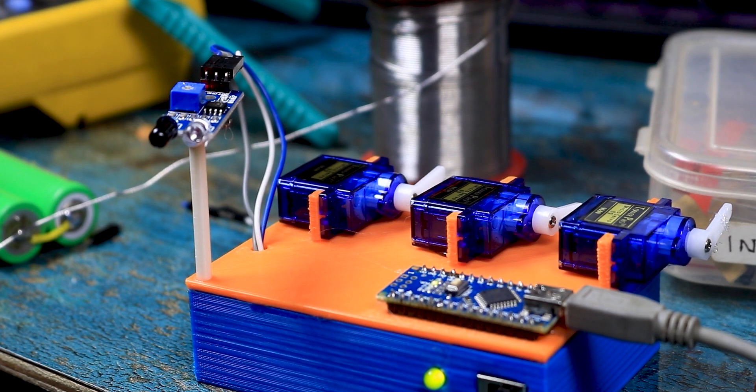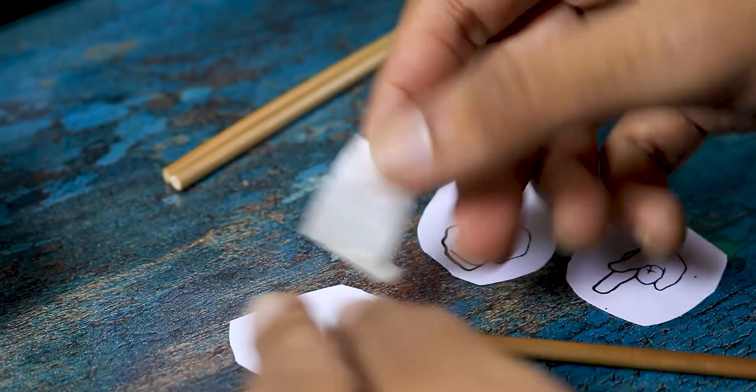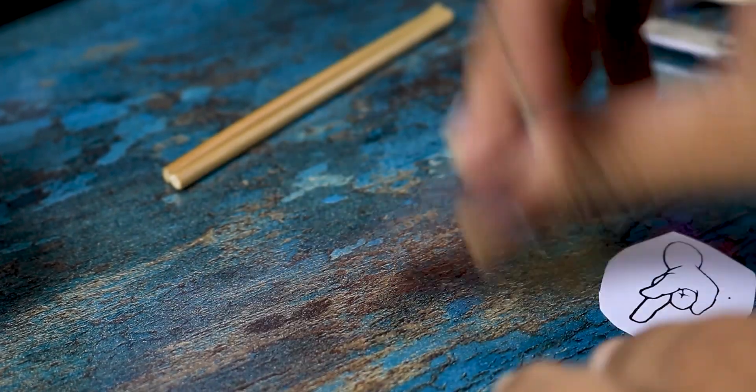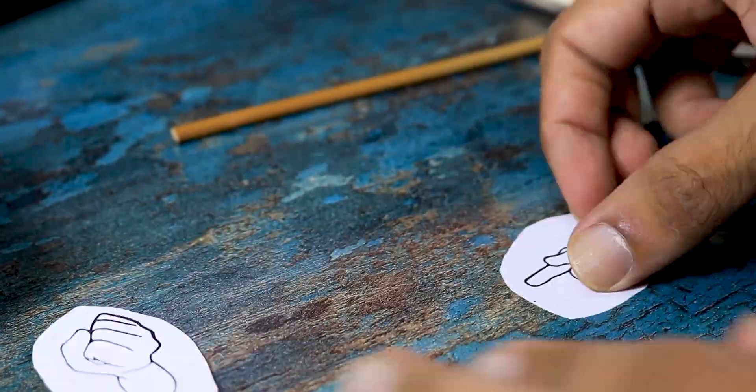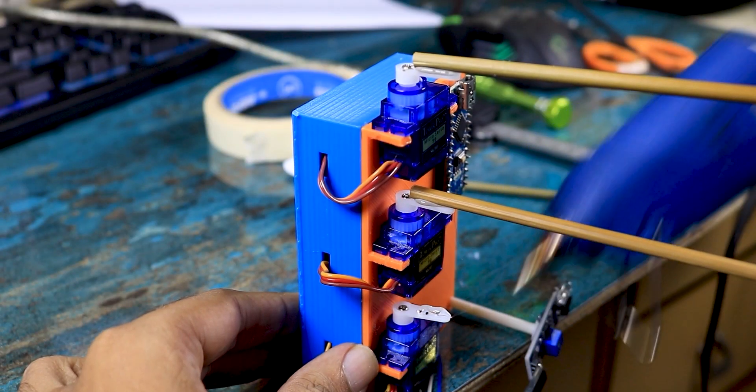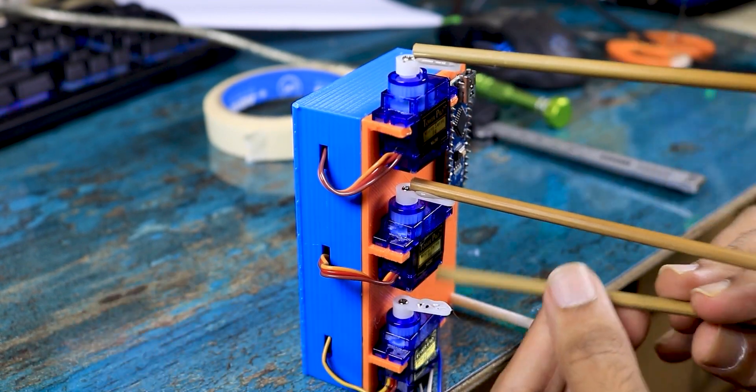After soldering and assembling everything, I uploaded the code to the Arduino Nano and tested it. And everything worked as expected as you can see. After which, I printed these hand gestures on a piece of paper. And using tape, stuck them on one side of this bamboo stick. And using hot glue, I glued the other side of the bamboo stick to the servo motor's arm. And this project was complete.